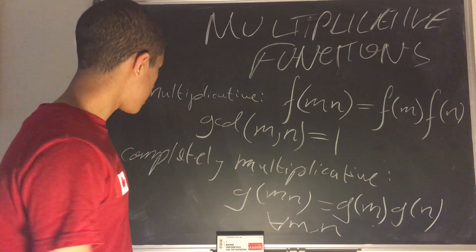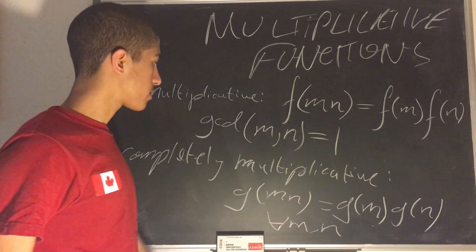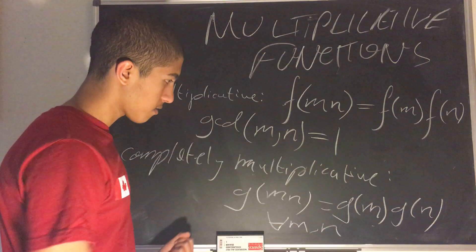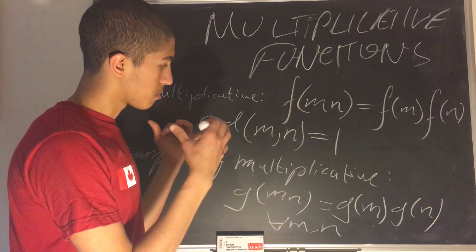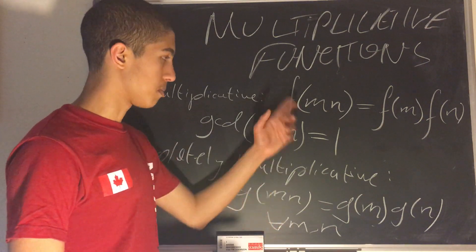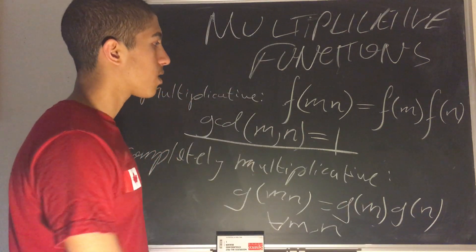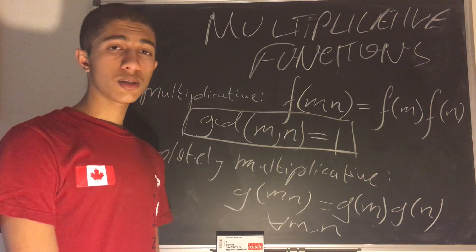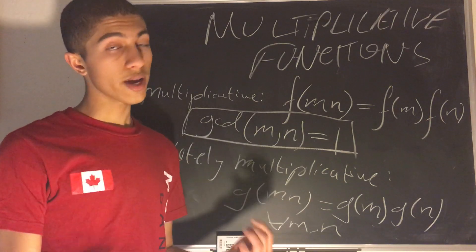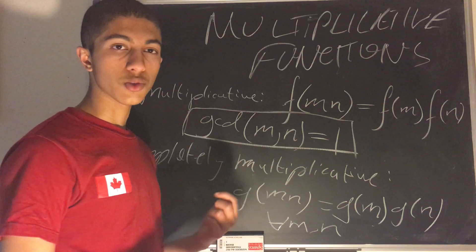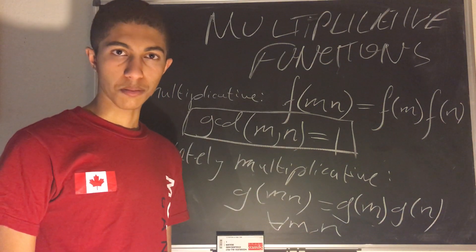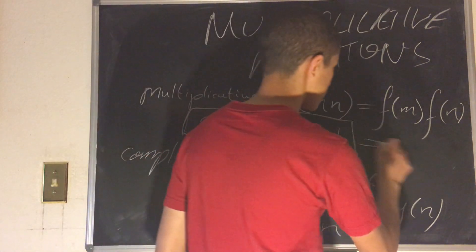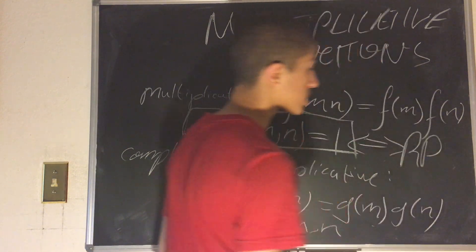We can see right away that simple multiplicativity is a much more restricted condition, whereas complete multiplicativity is much more open. Simple multiplicativity necessitates that m and n are both relatively prime, meaning gcd(m, n) equals 1 — that the greatest factor both m and n share in common is 1. For example, 6 and 5 are relatively prime because they don't share any factors in common other than 1. This condition is also sometimes called coprime.